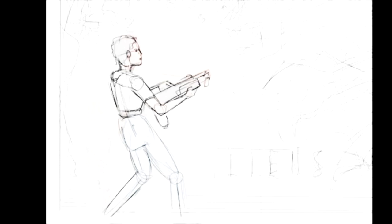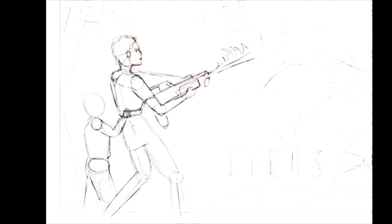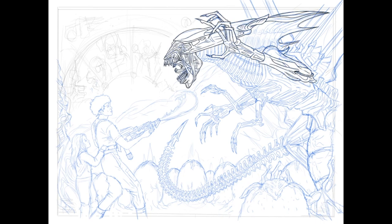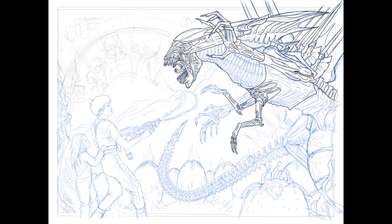It was important to get the pose of Ripley correctly. I had several versions I worked on until I settled on the right one. Skipping ahead, here we have the blue line illustration. Once everything is drawn, I make the lines blue in Clip Studio, and this really helps me to see the image and makes it a lot easier to ink on top of as I'm adding in all those details.